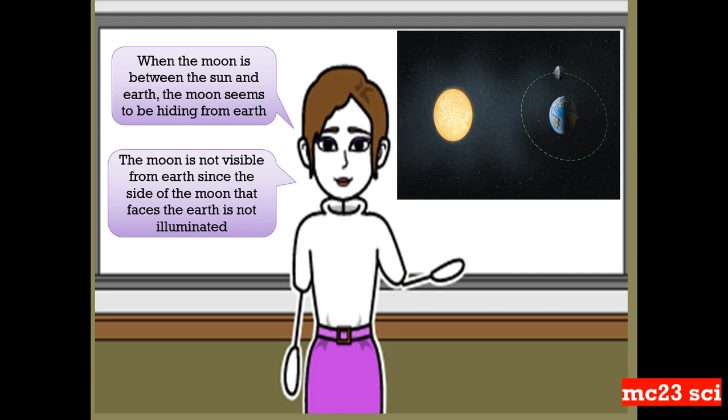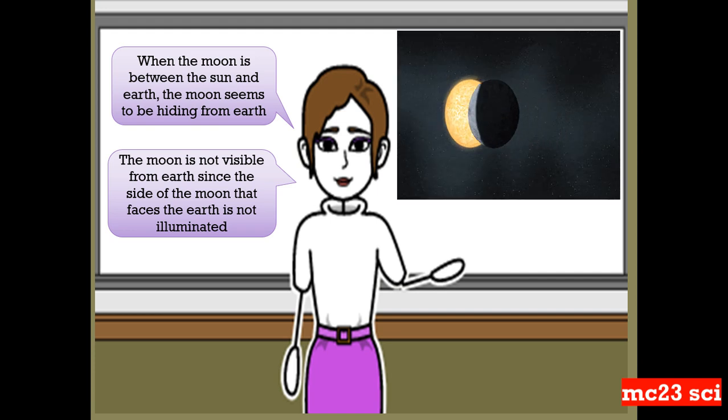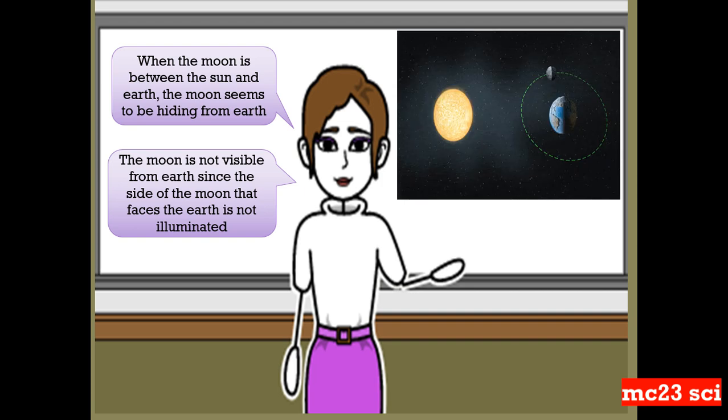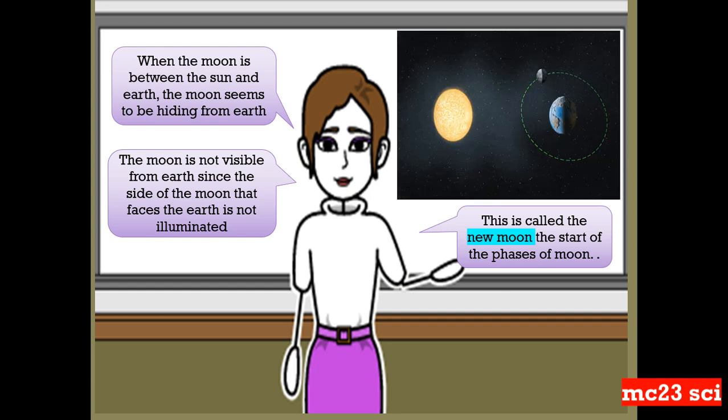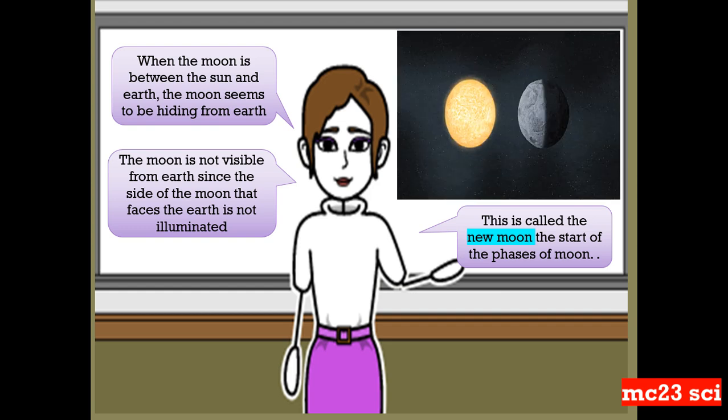The moon is not visible from Earth since the side of the moon that faces the Earth is not illuminated. This is what we call the new moon. The new moon is the start of the phases of the moon.